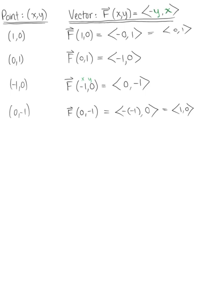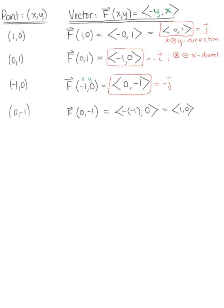Before we sketch, let's observe each vector. The first vector (0, 1) is equivalent to j-hat, pointing in the positive y direction. The second vector (-1, 0) is equivalent to negative i-hat, pointing in the negative x direction. The third vector (0, -1) is equivalent to negative j-hat, pointing in the negative y direction. The last vector (1, 0) is equivalent to i-hat, pointing in the positive x direction.